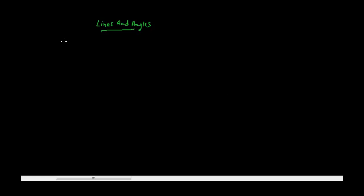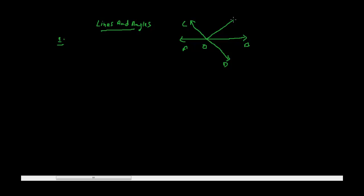Today let's discuss lines and angles. Let's look at the first problem. AB is a straight line, and CD is also a straight line. They intersect at O. We also have another ray E which forms angle BOE.